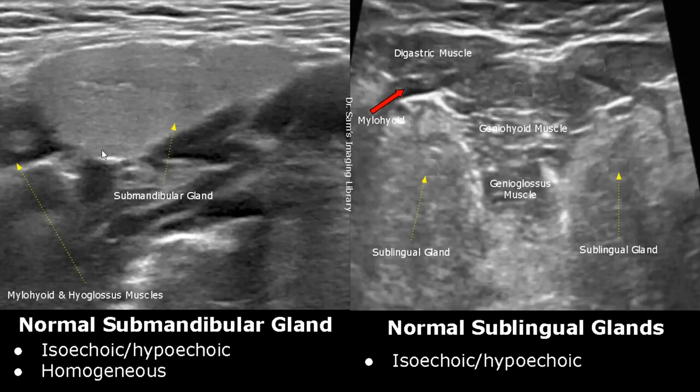On the right side, we have the normal sublingual glands. We can see both of them in this image, as it is a transverse view. They can be isoechoic or hypoechoic to adjacent structures.